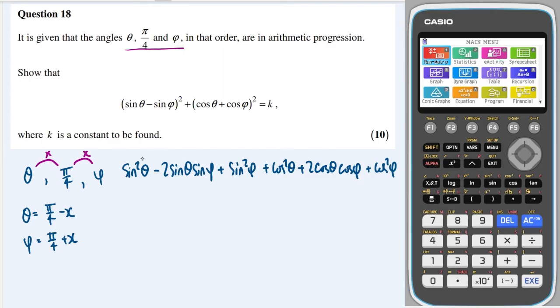we can then collect up. And we have a sine squared theta plus a cos squared theta, so that's equal to one. We have a sine squared phi plus a cos squared phi, so that's equal to one. And then we have two lots of cos theta cos phi minus sine theta sin phi.